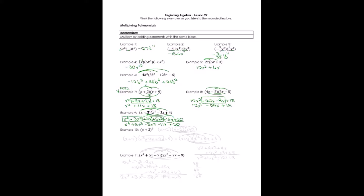Example 10: we want to take x plus 2 and cube it. The problem is really (x + 2) times (x + 2) times (x + 2) — three binomials. There's no way to do this in one step, so we'll take the last two binomials and FOIL them first, then multiply the resulting trinomial by the first binomial. Let's carry down that first binomial as we work.